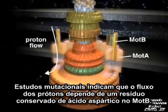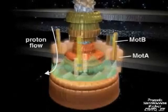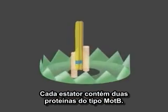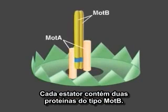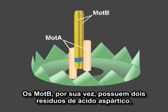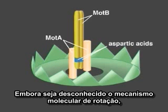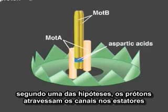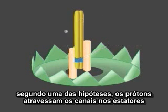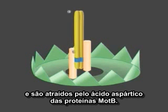Mutational studies suggest that a conserved aspartic acid in MotB functions in proton conductance. Each stator contains two MotB proteins, and therefore also contains two of these important aspartic acids. Although the molecular mechanism of rotation is not known, one possible model describes protons moving through the channels in the stators and binding to the aspartic acid in the MotB proteins.